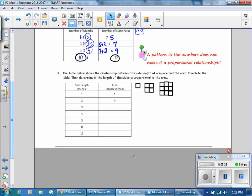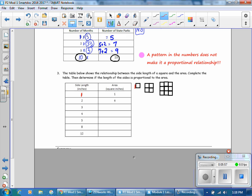Next, the table below shows the relationship between the side length of a square and the area. Complete the table. Then determine if the length of the sides is proportional to the area. In our first problem, we have the side length is one. So here is a square with a side length of one. And the area of that square is one square unit.